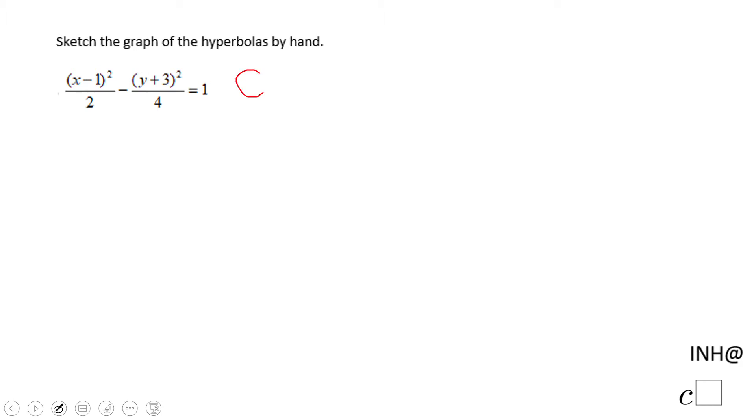The center for this hyperbola is going to be (1, -3) because we have x minus 1 and y plus 3, which means y minus negative 3.